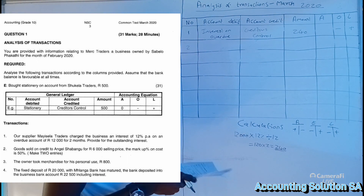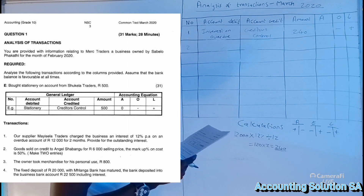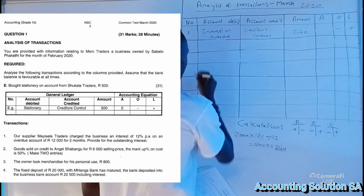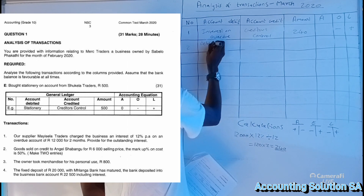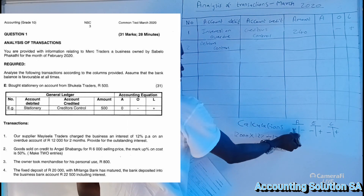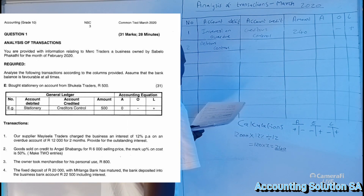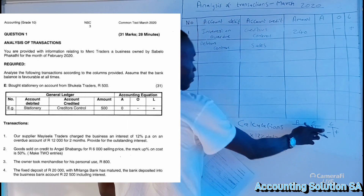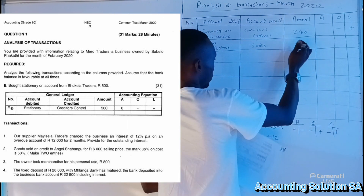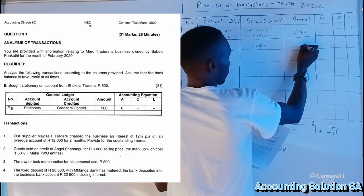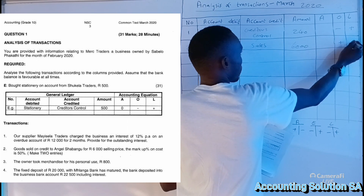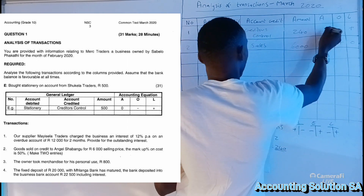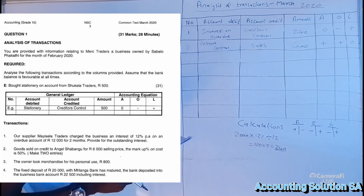For the first entry of transaction two — goods sold on credit at a selling price of R6,000. Because it has been sold on credit, Debtors Control will increase because it is an asset. The other account to record is Sales. Sales is income, so Owner's Equity is plus and Debtors Control as an asset is also plus. Amount is R6,000.